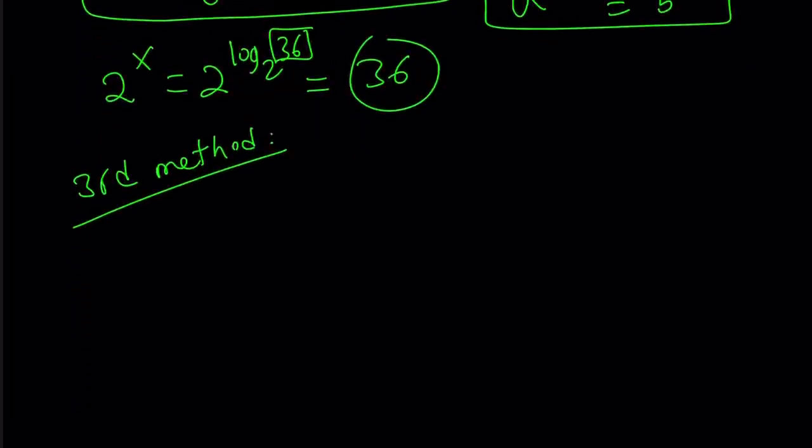Okay. With the third method, and let me rewrite the original problem one more time. 6 to the power 1 minus 2 over x equals 3. We're supposed to evaluate 2 to the power x.